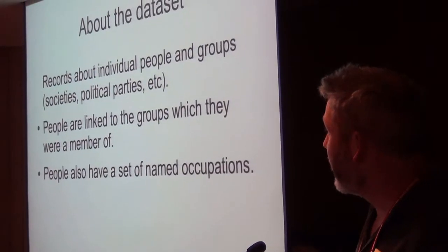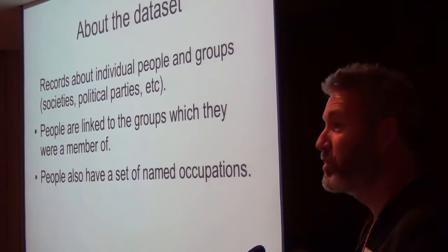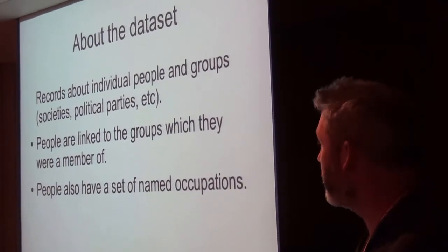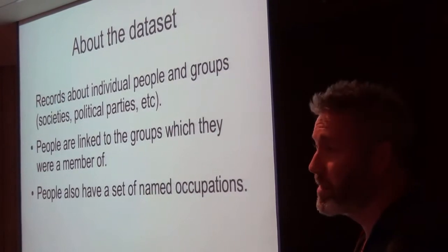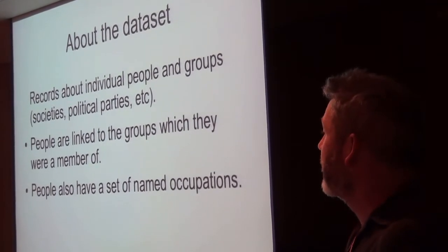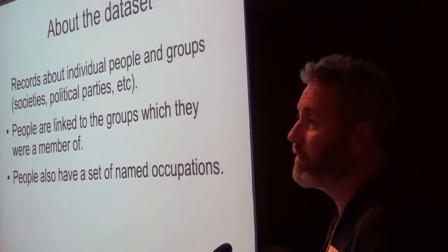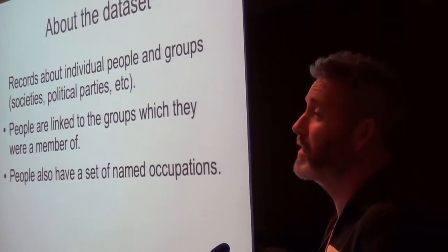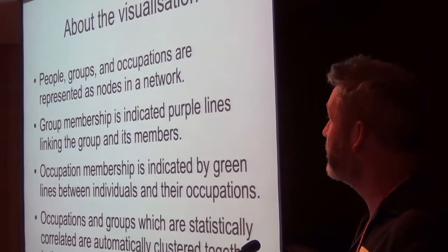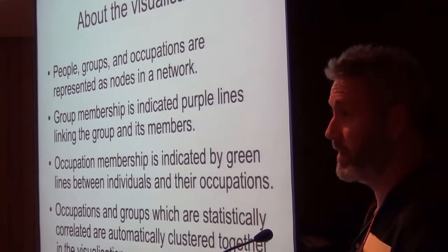About the dataset: we've got people and groups. The individual people are notable women; the groups are often feminist groups, political parties, that sort of thing. The individuals also have named occupations, which are either paying jobs or avocations. The people, the groups, and the occupations are all represented as nodes — as the dots on the graph.